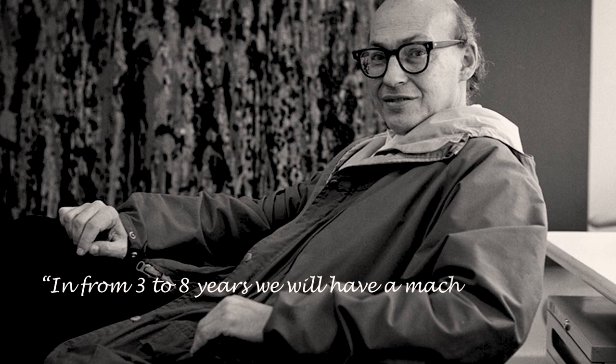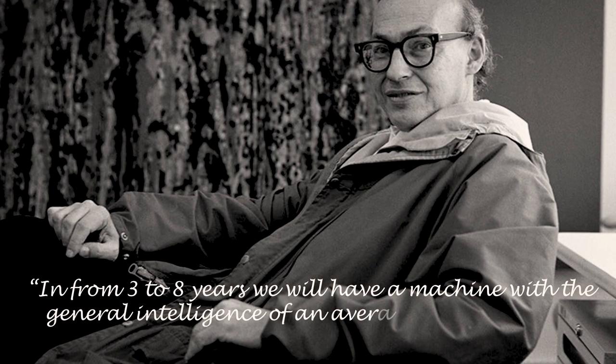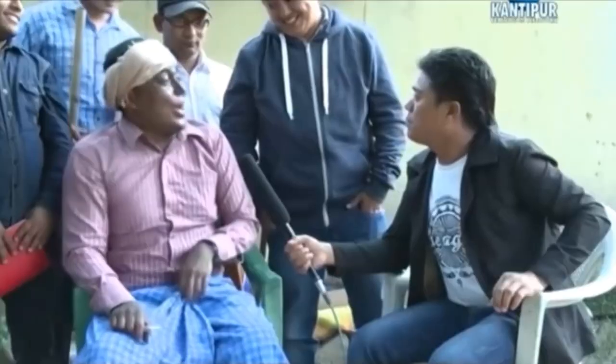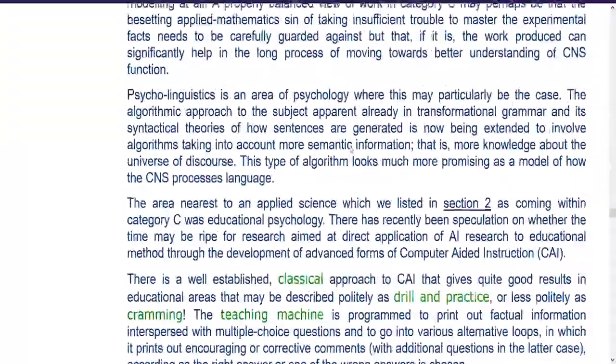Around the same time, Marvin Minsky quotes, in from 3 to 8 years, we will have machines with the general intelligence of an average human being. Are you commending me? Well, you know what? I'm loving the confidence, man. Props for that. Alright, after the 50s and 60s, two decades of AI hype, the field of AI saw its first winter. This is defined as the period where the funding of AI research and development was cut down. It all started with James Lighthill's 1973 report to the British Science Research Council. This report led to a drastic halt in AI. After the effects of the first AI winter faded, a new era of AI emerged.